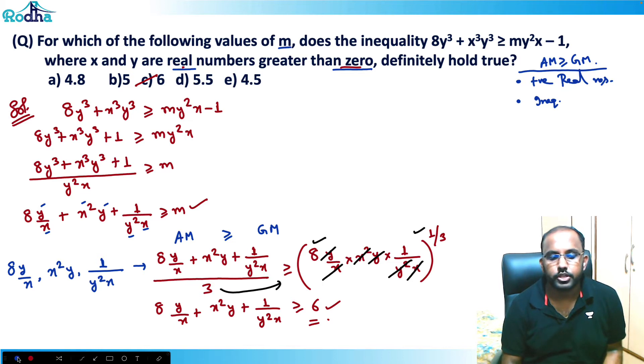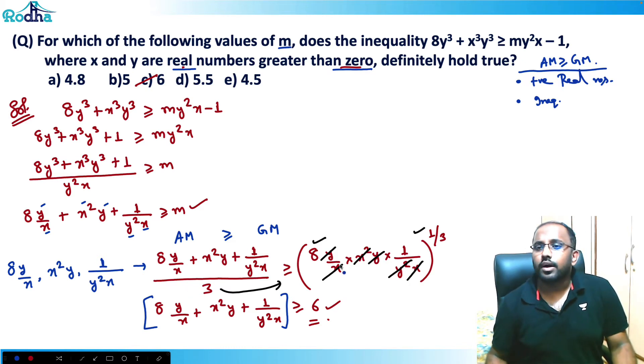So obviously this whole expression is always greater than equal to 6, right? So m has to take minimum 6. Because all will be greater than equal to 6. So this will be 6 here, this is the answer. So see, there is a little high quality question here, a little direct question, you have to think of it.